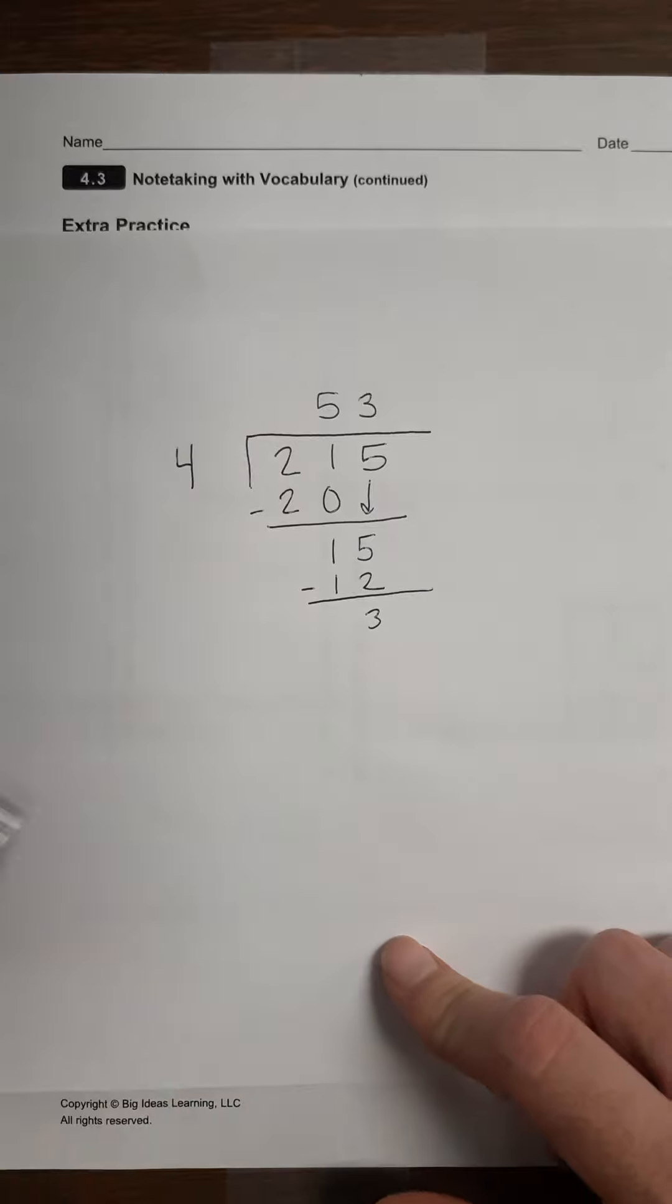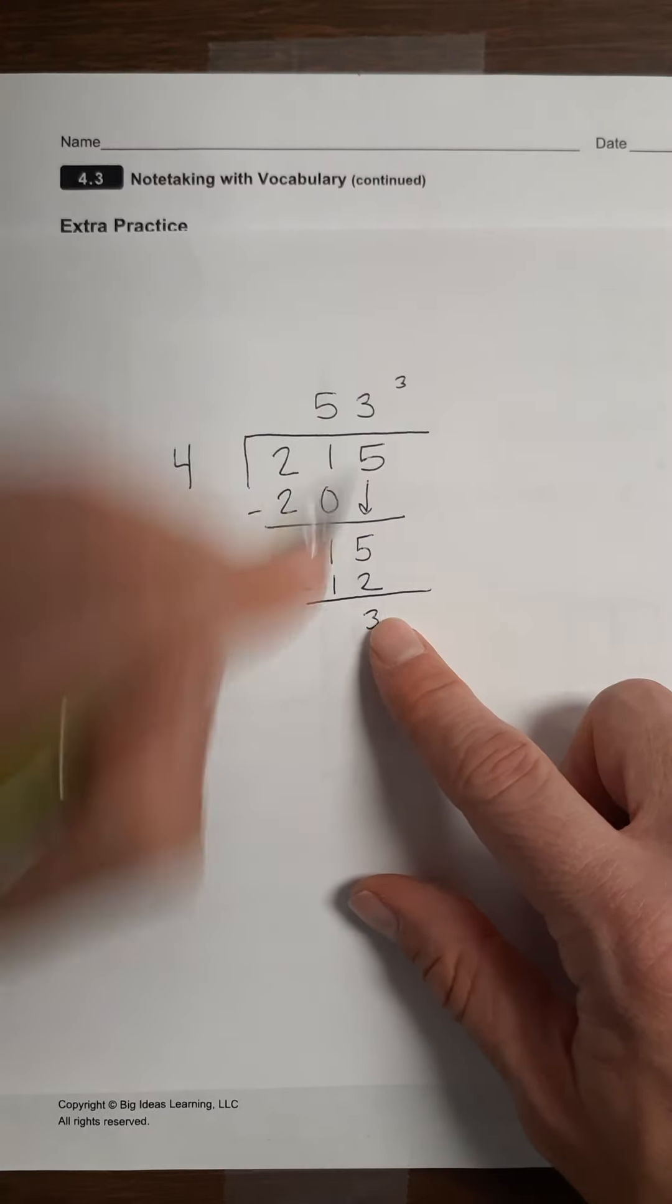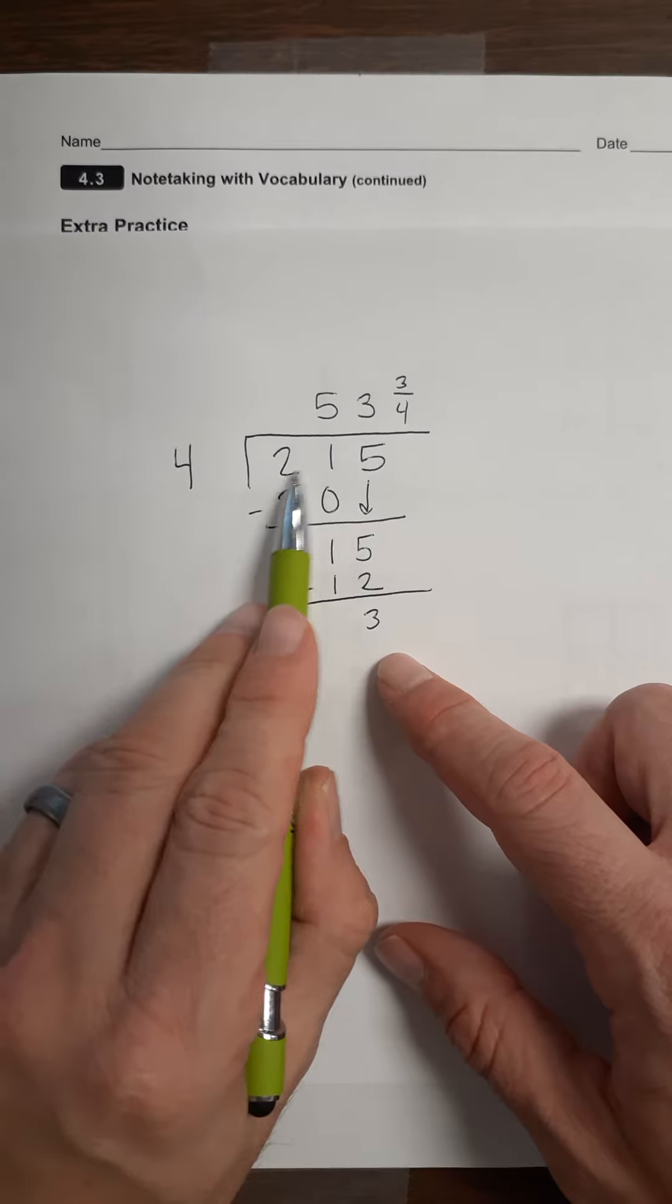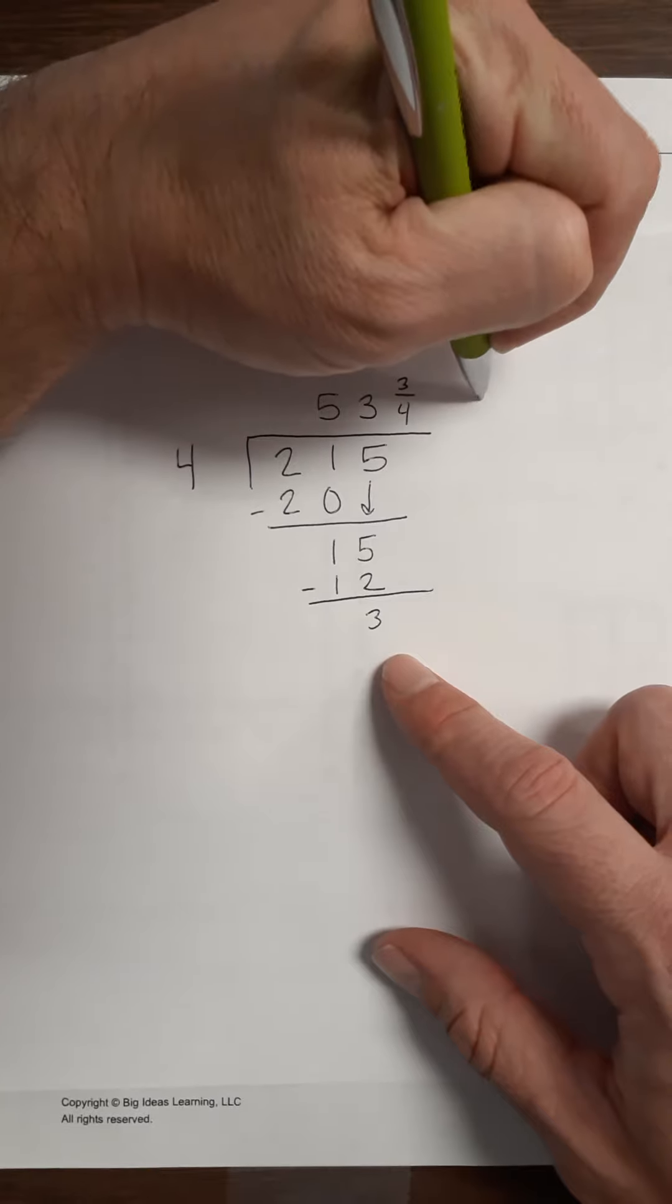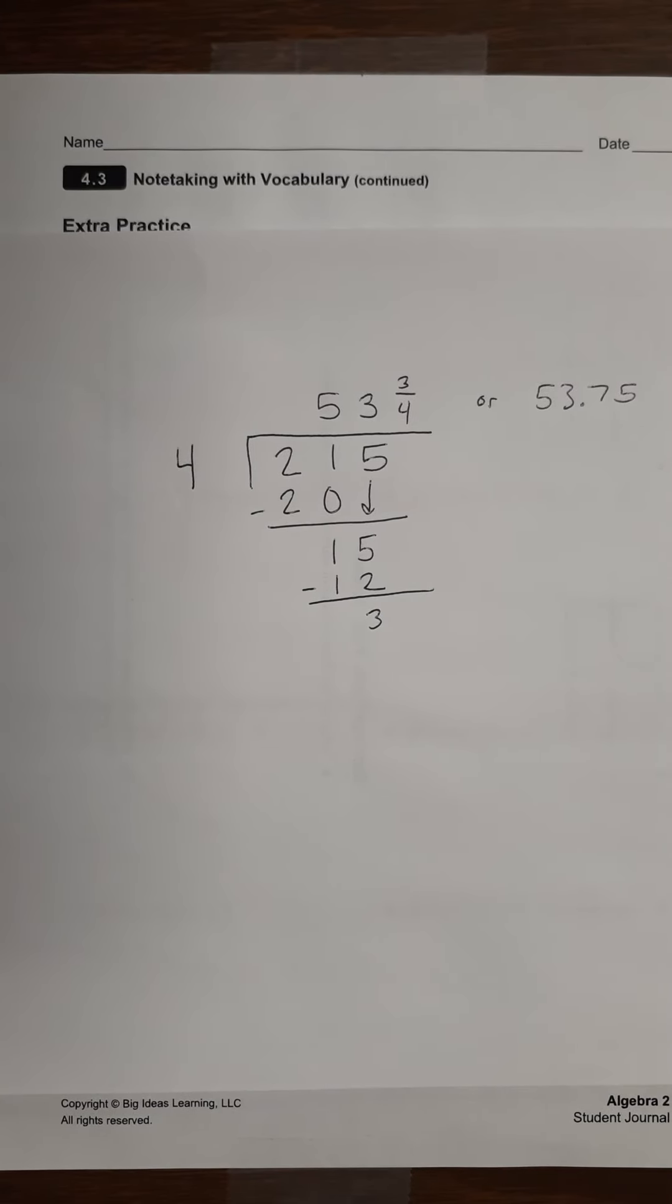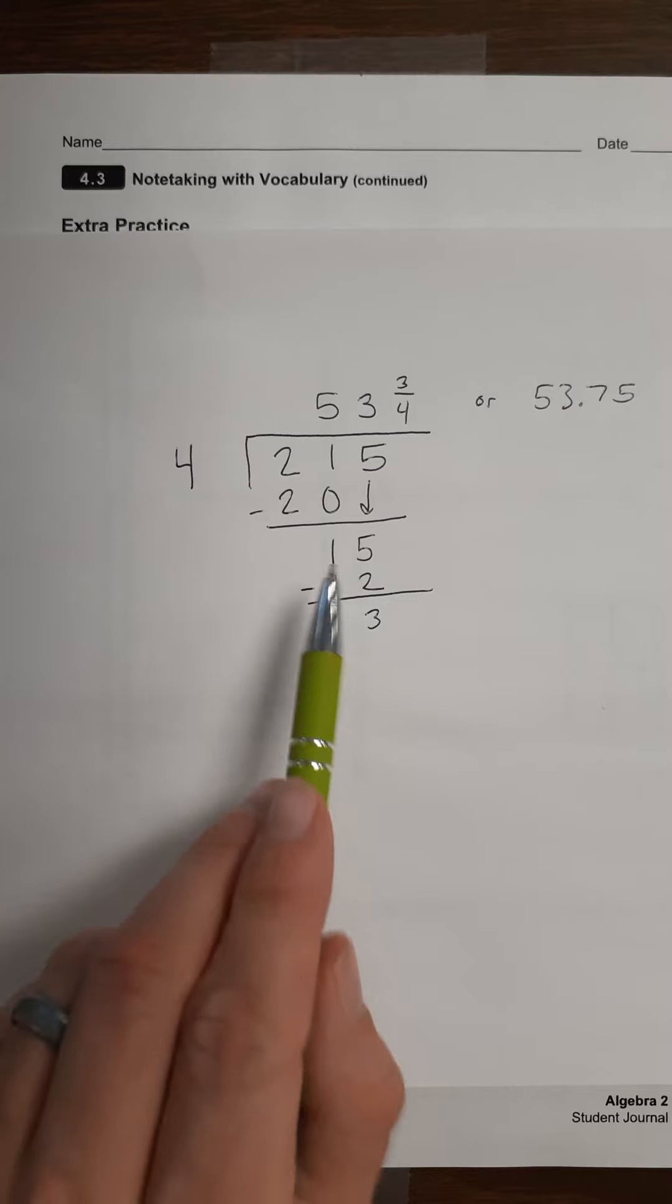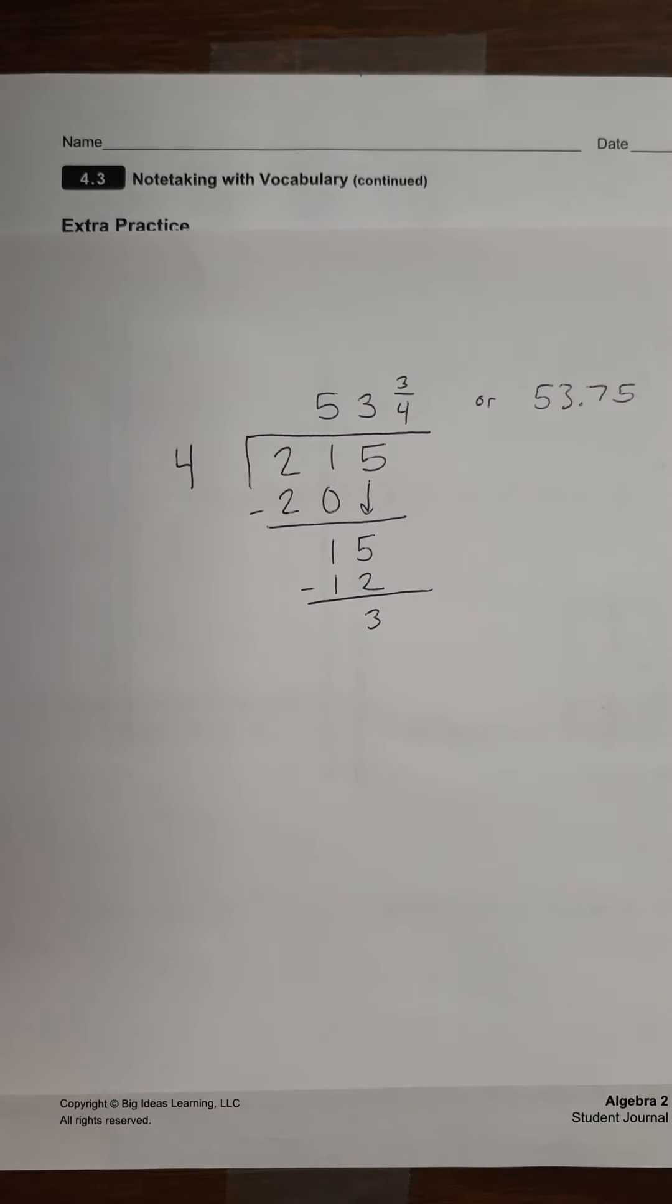So we have 53 with a remainder of 3, which is the same thing as 53 and 3 fourths, or I suppose you could write it as 53.75. So that is an overview of long division that you might have done when you were in upper elementary school. So with that said, can we take some of those principles and apply it to dividing polynomials? The answer is yes.